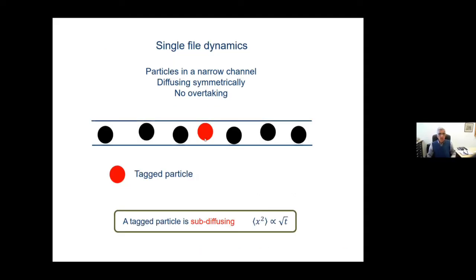The problem of particles moving in a narrow channel is a classical problem, which has been studied for many years. If you have particles such that they cannot cross each other in the channel, the channel is narrow enough. This is known as single file, single file diffusion. And if you take a particular particle and look at its fluctuations, you see that it's sub-diffusive. And that's known as single file dynamics.